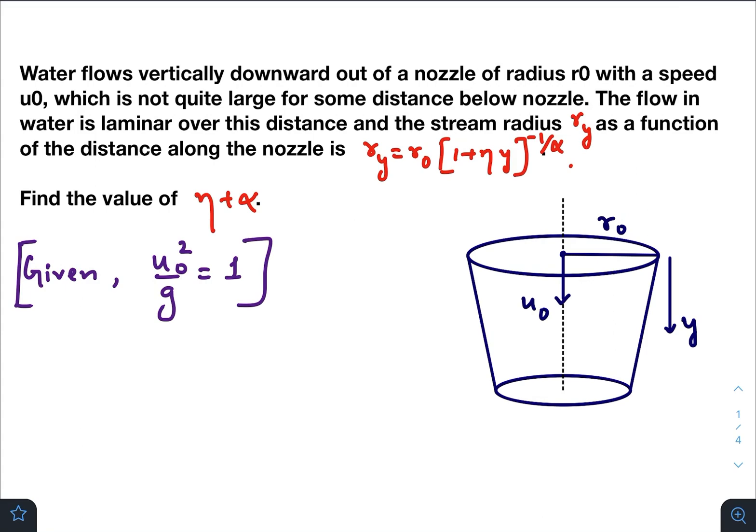The flow in water is laminar over the distance, and the stream radius r_y as a function of the distance along the nozzle varies like this: r_y equals r0 times 1 plus eta y to the power minus 1 by alpha. So with increase in y, the stream radius is varying like this.